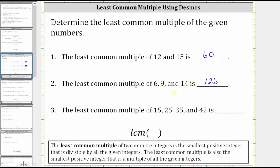And finally, the least common multiple of 15, 25, 35, and 42 is 1050, because 1050 is the smallest positive integer that's divisible by 15, 25, 35, and 42. It's also the smallest common multiple of all four numbers.